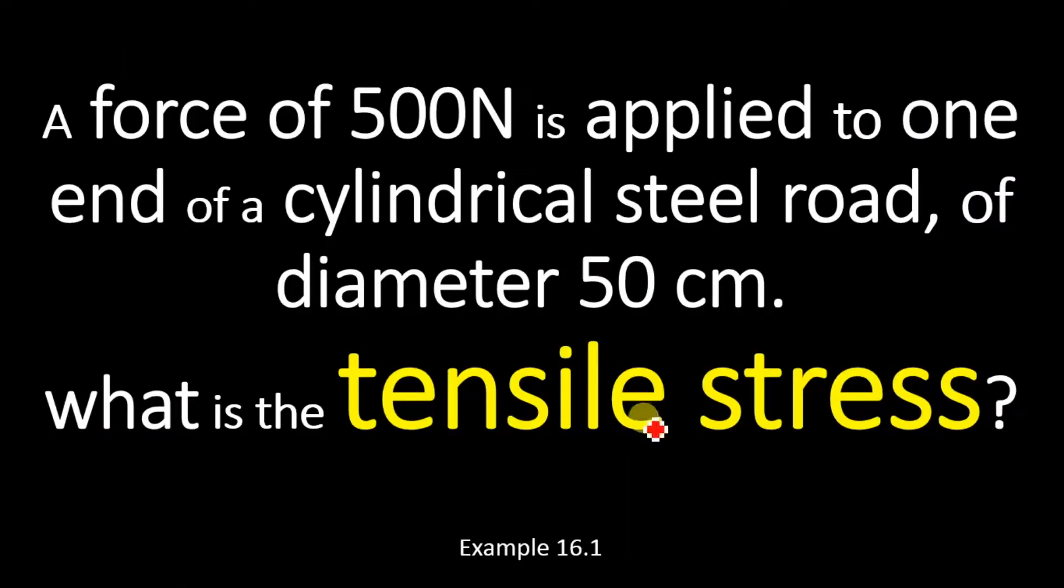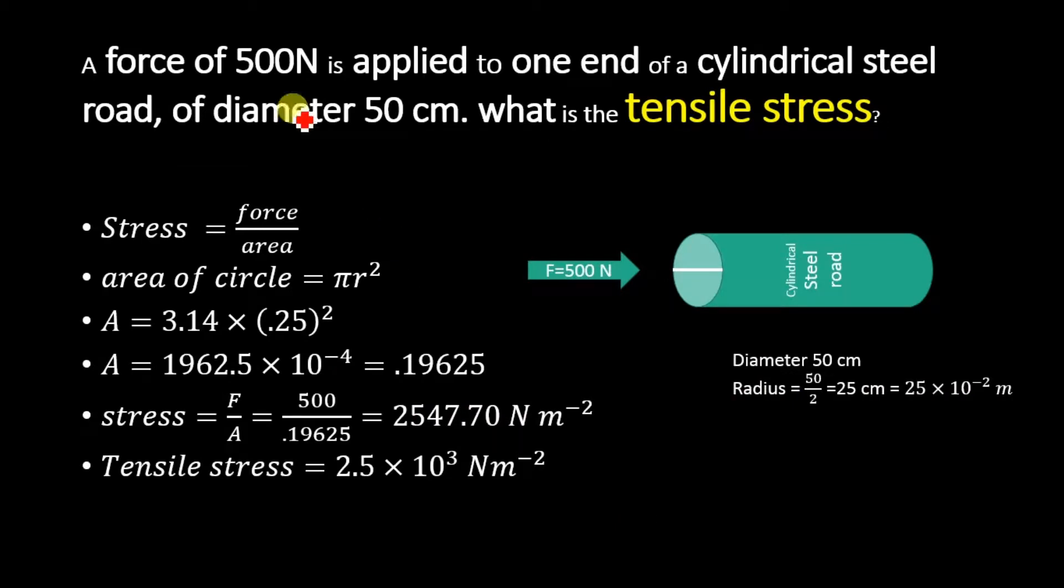Today we will solve this simple numerical problem and determine the tensile stress. This is example number 16.1 from the second year physics book. The numerical problem is: a force of 500 Newton is applied to one end of a cylindrical steel rod. This is a cylindrical steel rod, and a force of 500 Newton is applied to this circular end.